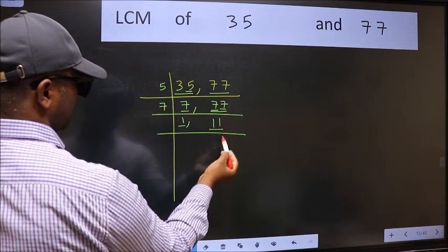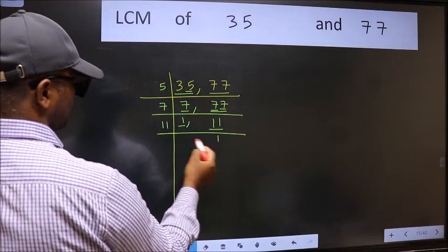Focus on the next number 11. 11 is a prime number, so 11 times 1 is 11.